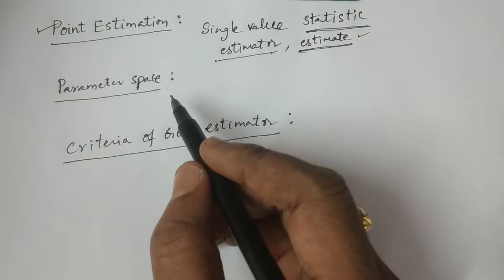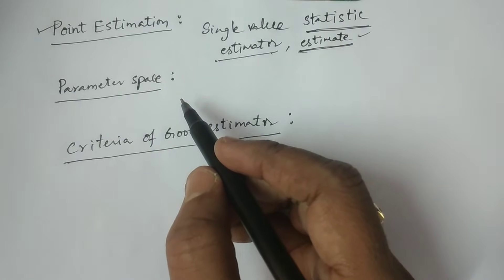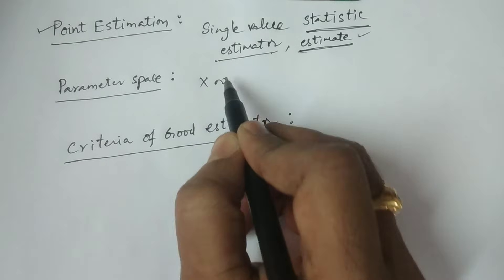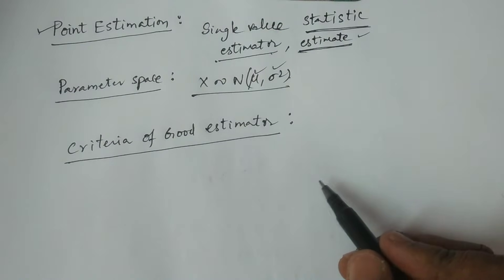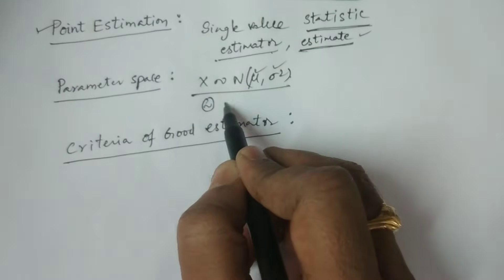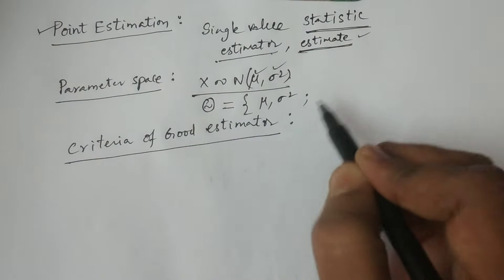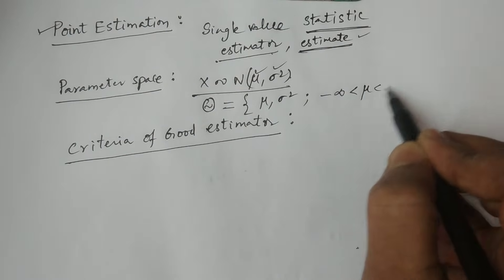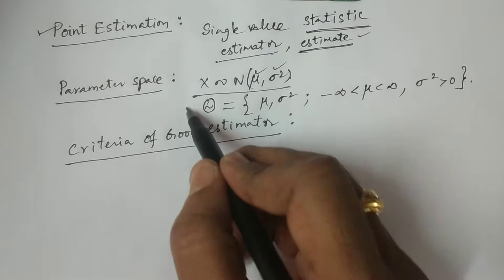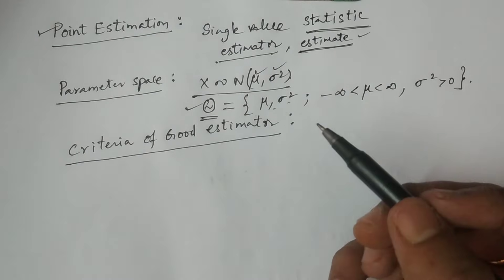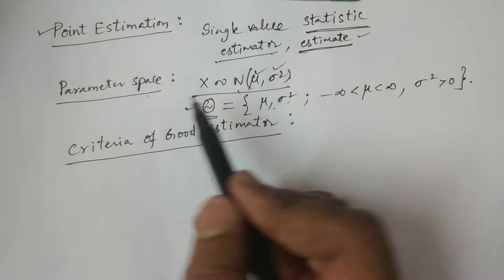The set of all parameters of the population is called the parameter space. For example, if X follows a normal distribution with mean μ and variance σ², the parameters are μ and σ². The parameter space is denoted by capital Θ, defined as the set of parameters {μ, σ²}, where −∞ < μ < ∞ and σ² > 0. This is the parameter space Θ = {μ, σ²} — the set of all parameters in the normal population.